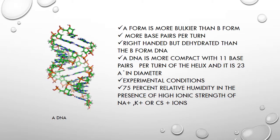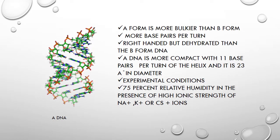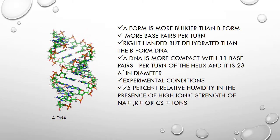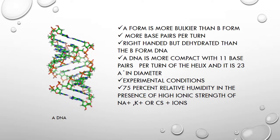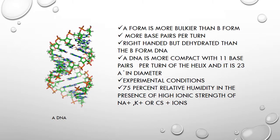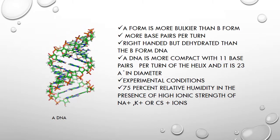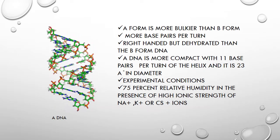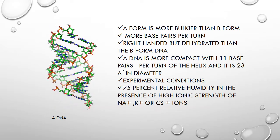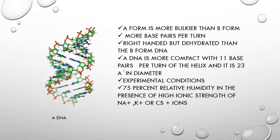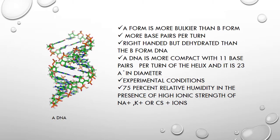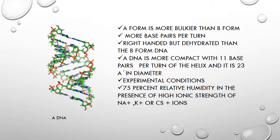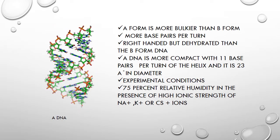Next, A-DNA. The A form is more bulky than the B form and has more base pairs per turn. It is right-handed but more dehydrated than the B form. A-DNA is more compact with 11 base pairs per turn of the helix and a diameter of 23 angstrom. The bases are tilted more in relation to the axis of the helix than in B-DNA. A-DNA may occur under experimental conditions and is found at 75% relative humidity in the presence of high ionic strength of sodium, potassium, or cesium ions.